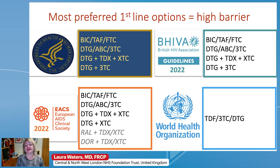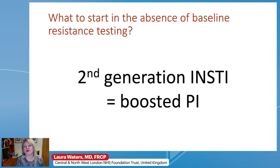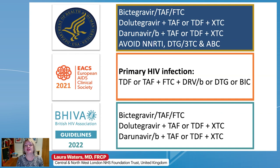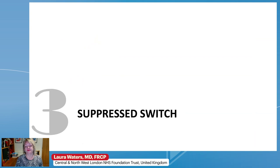Most first-line options are high barrier these days. Looking at DHHS, BEVA, and WHO, exclusively high-barrier regimens are recommended first line. EAC is mainly high barrier, but also includes raltegravir and doravirine. If you don't have a baseline resistance test, guidelines generally consider a second-generation integrase and a boosted PI to be interchangeable — all recommend bictegravir, dolutegravir, or boosted darunavir with tenofovir and either emtricitabine or lamivudine backbone. DHHS specifies to avoid NNRTIs, dolutegravir-lamivudine dual therapy, and abacavir — so those high-barrier three-drug regimens are all considered suitable without baseline resistance information.